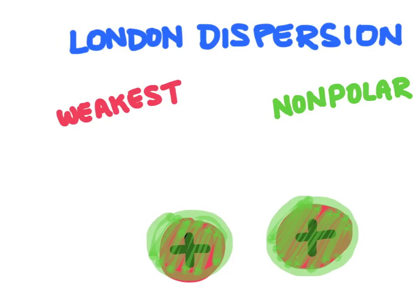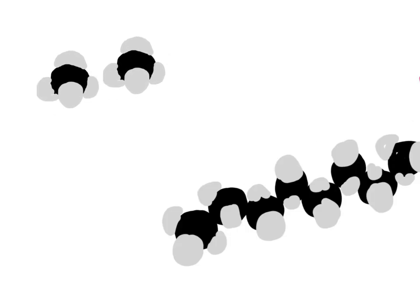London dispersion forces are going to be much greater with larger, heavier molecules. Here's an example: methane has one carbon with four hydrogens around it. Octane is made up of the same elements — carbons and hydrogens — but with eight carbons instead of one. Methane is a gas at room temperature, so two methane molecules are very loosely attracted to each other with London dispersion forces, but they're not attracted enough to actually stick together and form a liquid or a solid — they remain a gas.